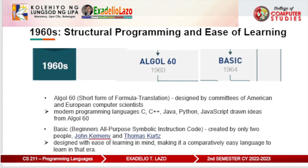In the 1960s, we saw structural programming and ease of learning. The most iconic language family here is ALGOL — a typical 'designed by committee' language, created by committees of American and European computer scientists. ALGOL 60, created in 1960, was proven to be one of the most influential languages of its era since it paved the foundation for future programming language development. Most modern programming languages — C, C++, Java, Python, and JavaScript — drew ideas from ALGOL 60.